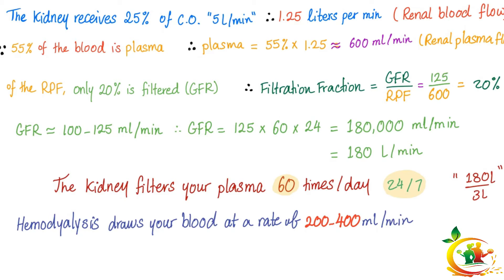Normal GFR is between 100 to 125 and it differs by age. GFR per day is 125 × 60 × 24 = 180,000 ml per day, or 180 liters per day. Since your plasma volume is only 3 liters, the kidney filters your entire plasma about 60 times per day.